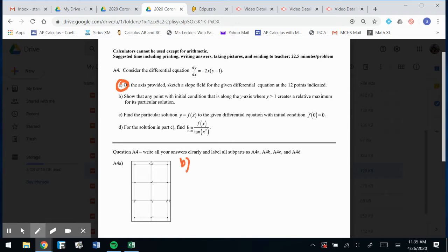Show that any point with initial condition that is along the y-axis where y is greater than 1 creates a relative maximum for its particular solution. Well, the only way that it could create a maximum is if I had a critical point, and they're telling me that y has to be greater than 1. Well, the only way that that derivative is going to be equal to 0, if y is greater than 1, would be if x had to be 0, because then the derivative would be equal to 0. That's probably what I had to figure out first.